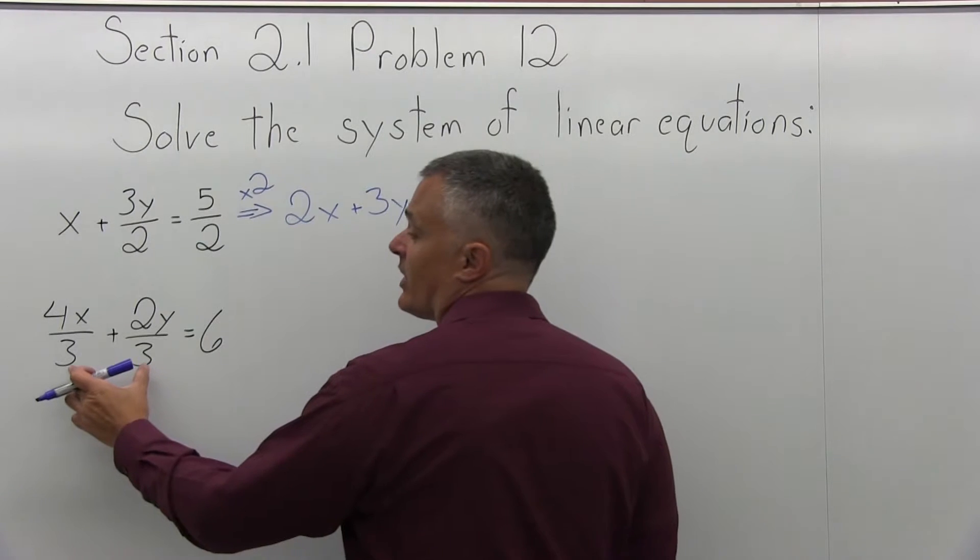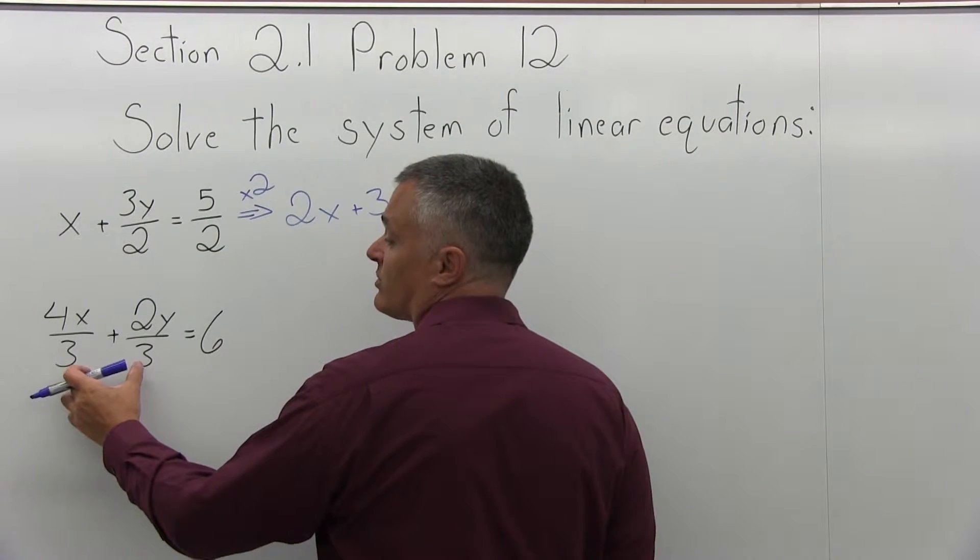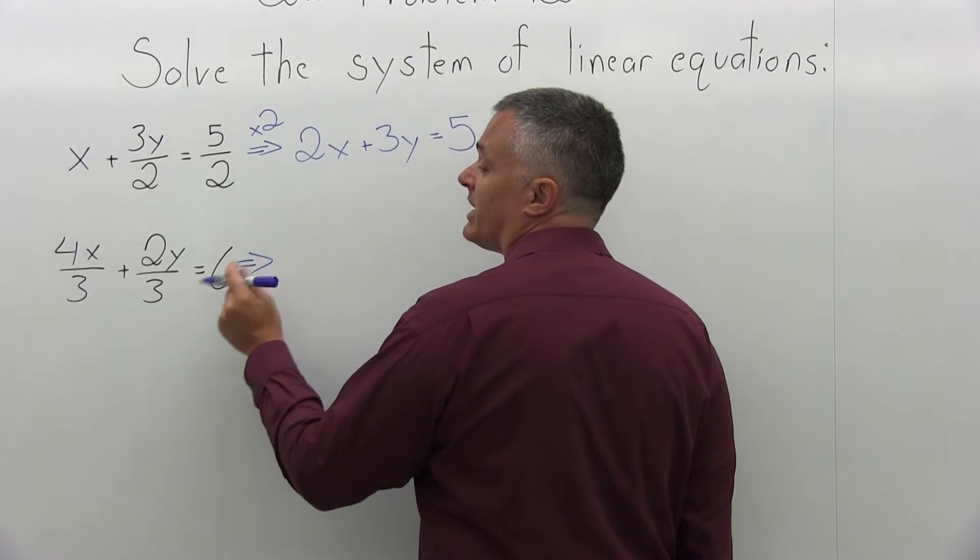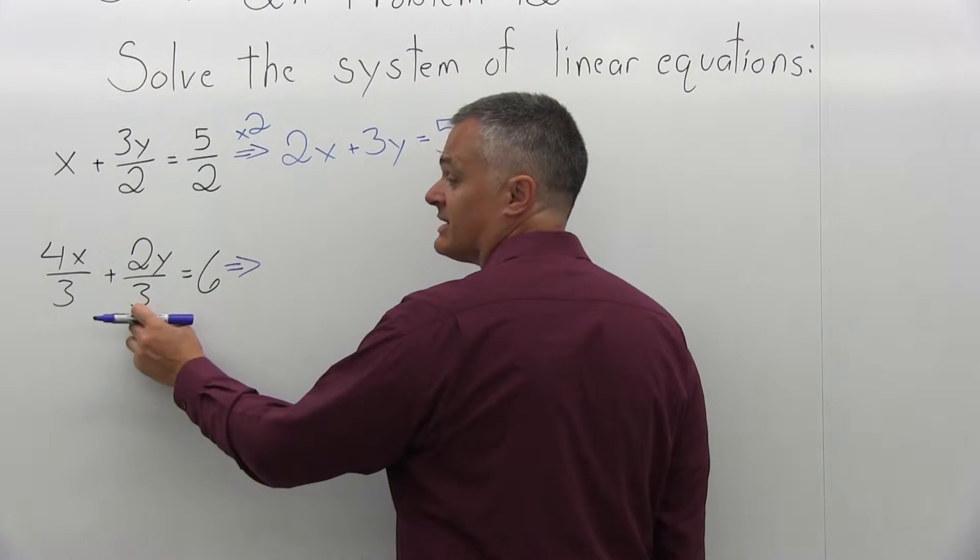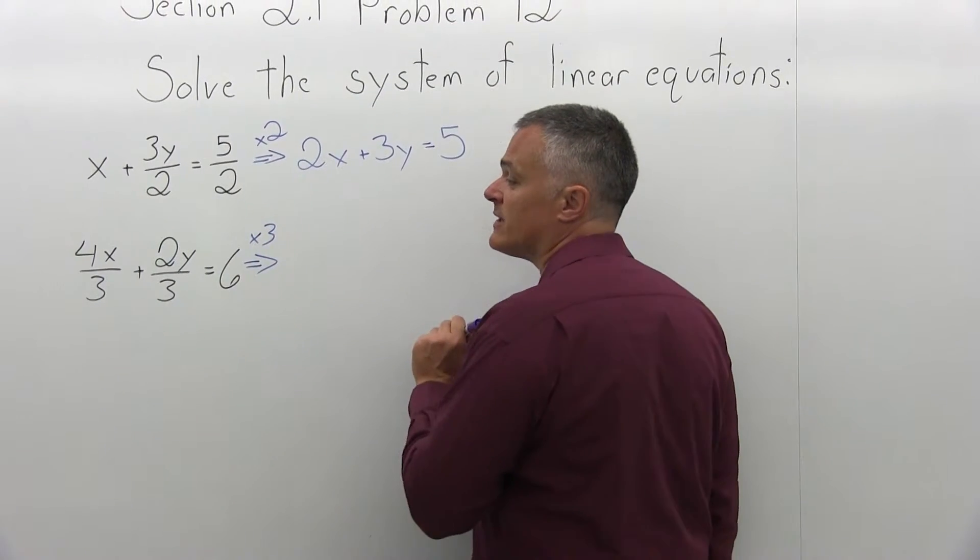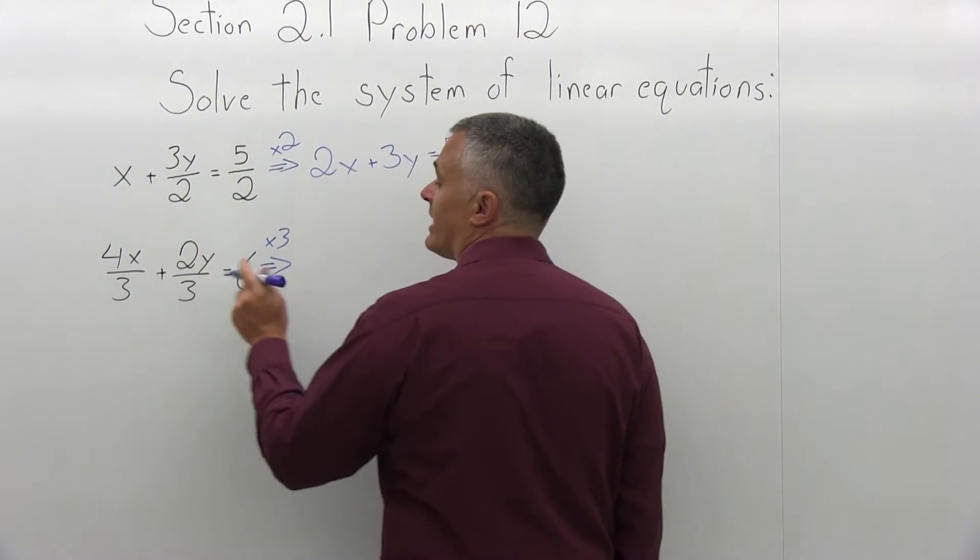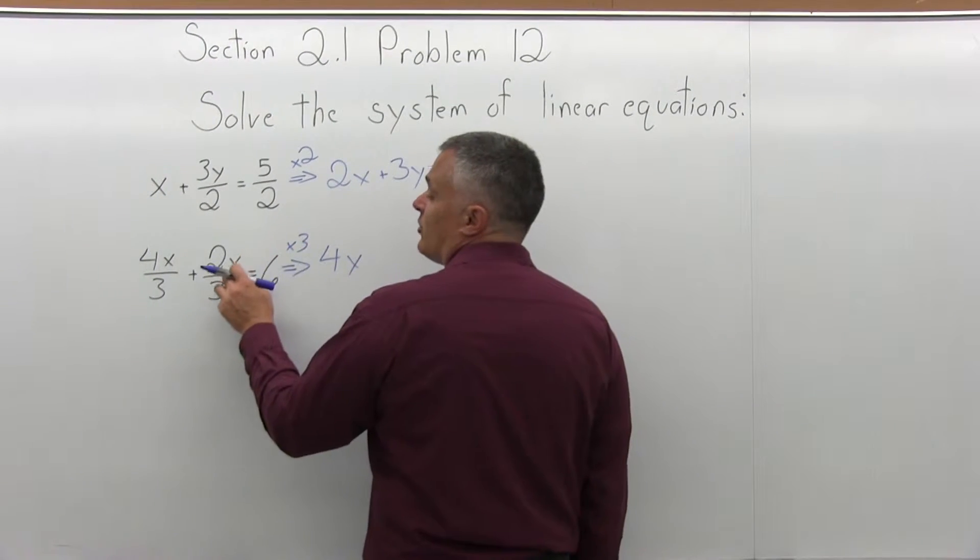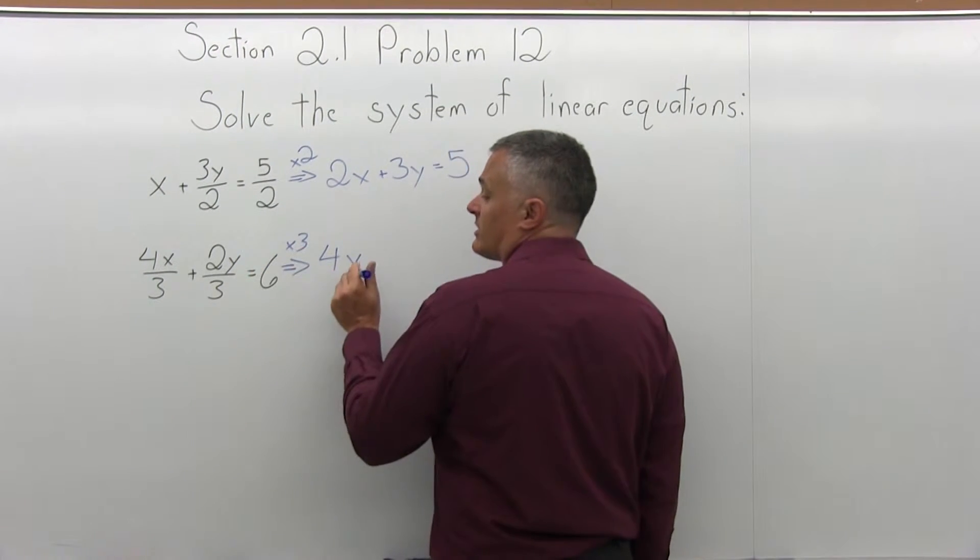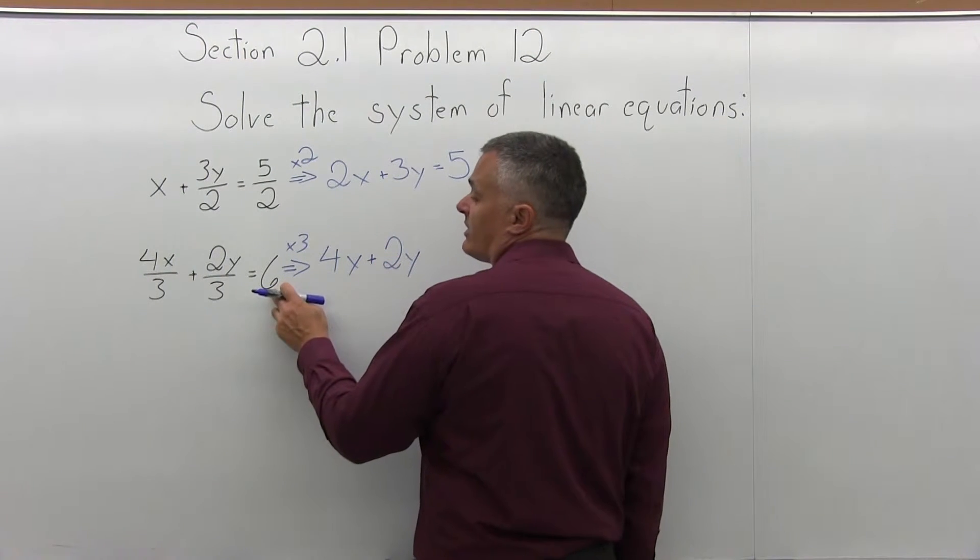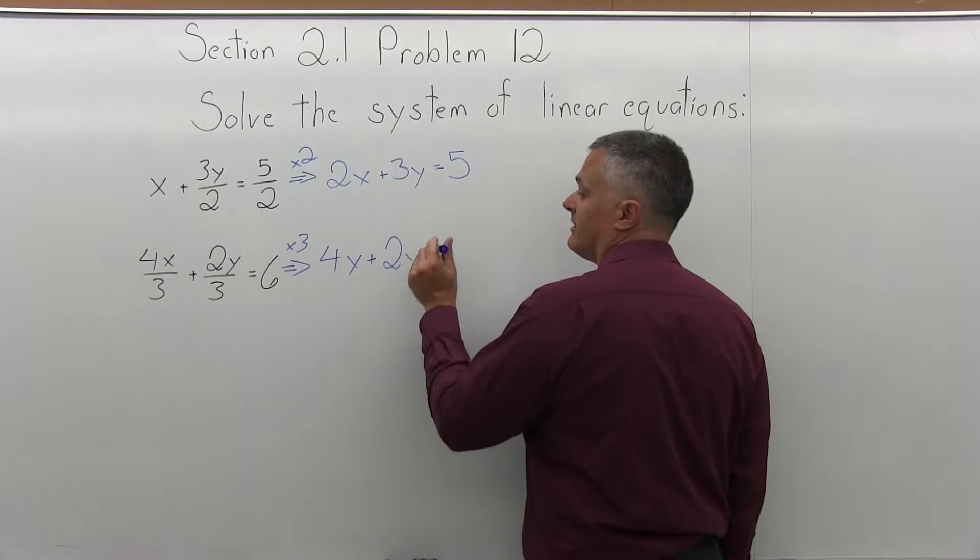And now this equation, 4x over 3 plus 2y over 3 equals 6, I'm going to multiply each piece times 3, because that's the denominator for the second equation. So everything times 3. 3 times 4x over 3 will be just 4x. 2y over 3 times 3, the 3's will cancel, giving me just 2y. And now here on the end, 3 times 6, that will become an 18.